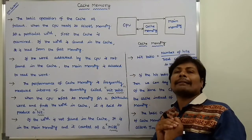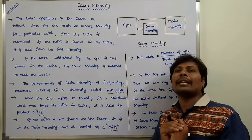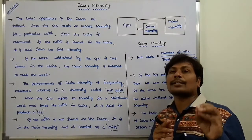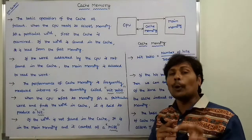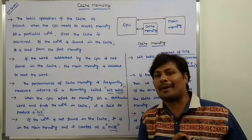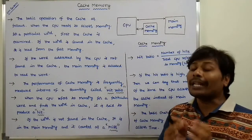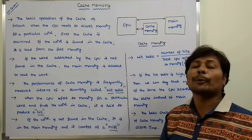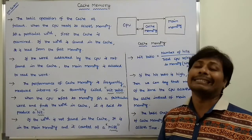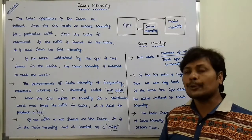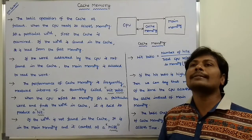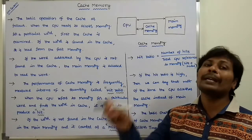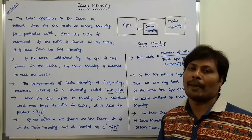A basic characteristic of cache memory is that the average memory access time is very low. Because of that, the execution time of the program is always reduced, so the performance of a computer also depends on cache memory.